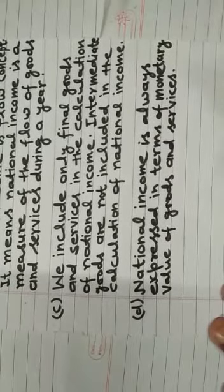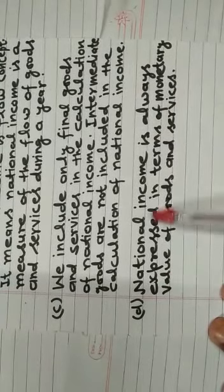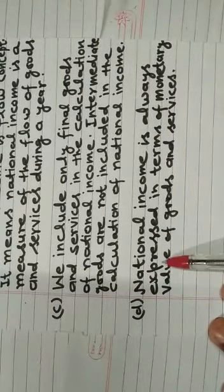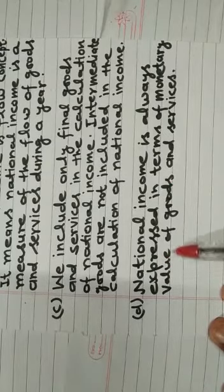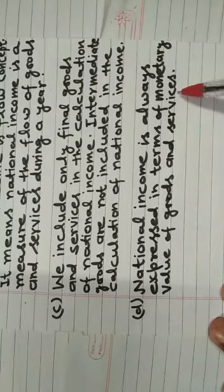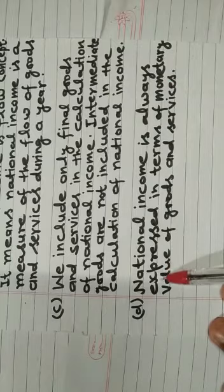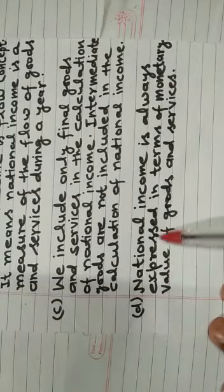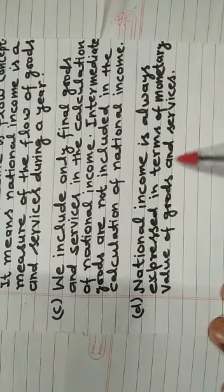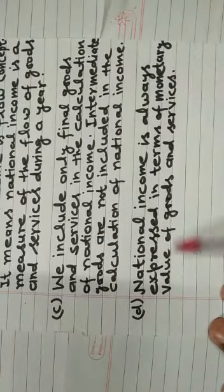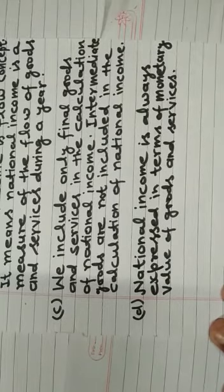Last point: National Income is always expressed in terms of monetary value — that is, money value — of goods and services. So, National Income is expressed in terms of monetary value of goods and services. Thank you.